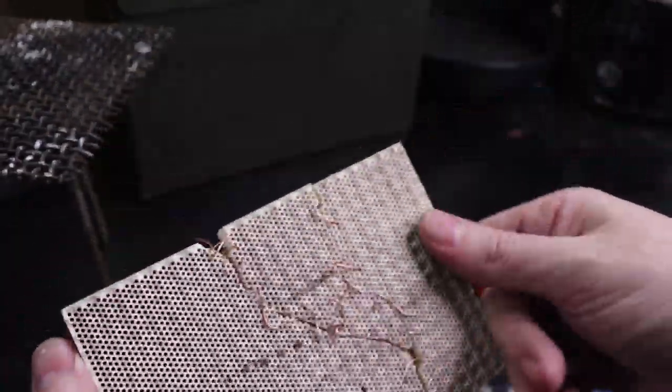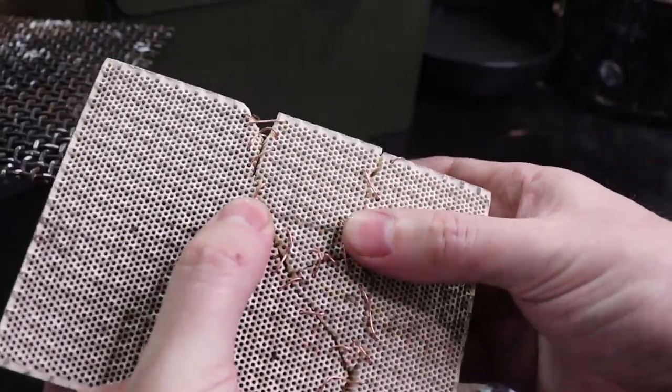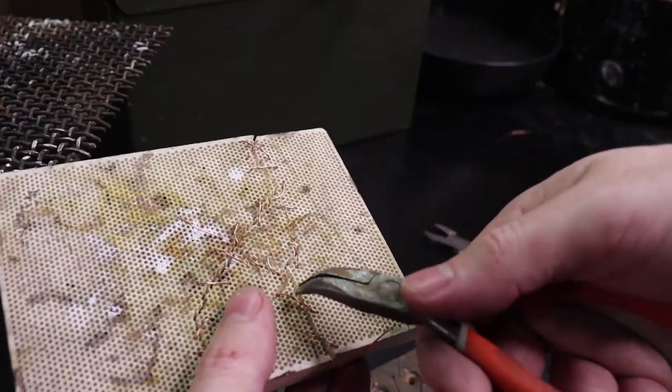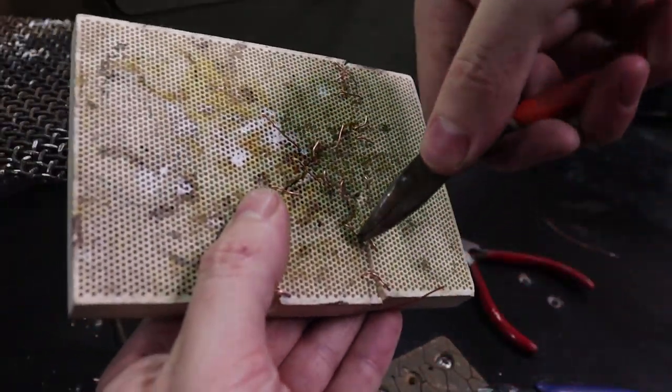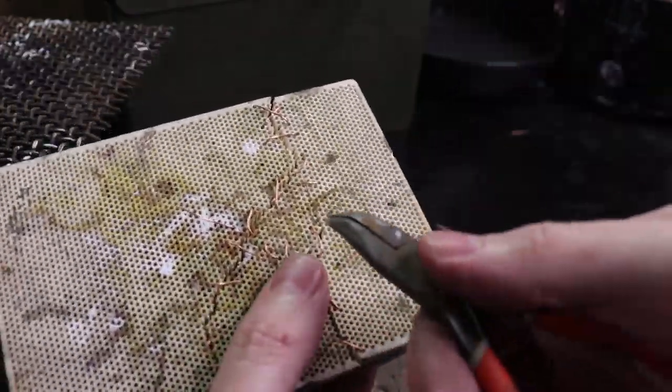All right so there we go. Once I have it at this point you can start pressing all of these down to tighten it up so it's not as wiggly. You can also just grab them with some pliers and twist, and then press them down and it'll start pulling stuff together.